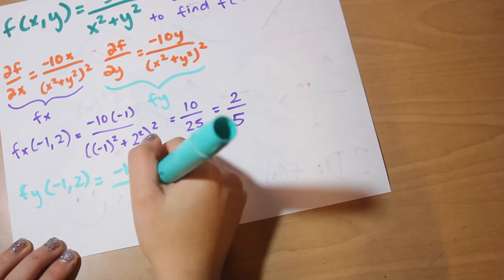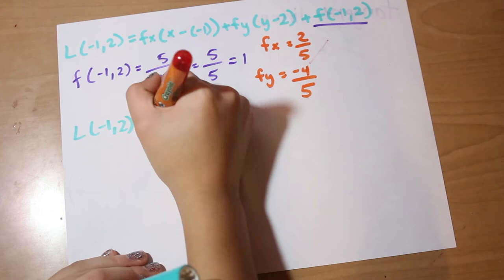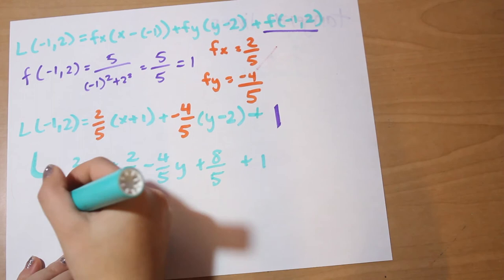So now we're going to move on to find that plane, which we're going to call Timothy. And remember, Timothy is in terms of x and y, because it's representing the z plane. So then we get this equation here: 2/5 x minus 4/5 y plus 3.